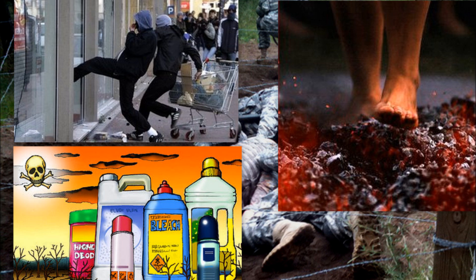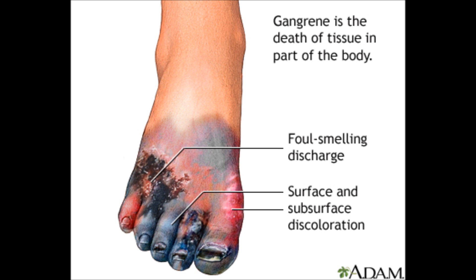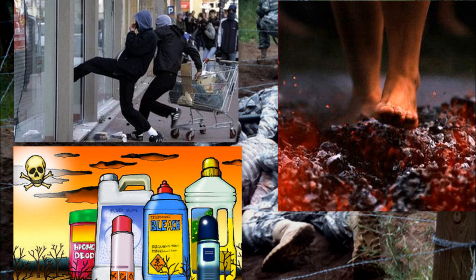Number four: trauma from mechanical, chemical, or thermal sources. The right answer is number four — trauma from mechanical, chemical, or thermal sources — as this is most likely to cause the development of ulceration and gangrenous lesions.